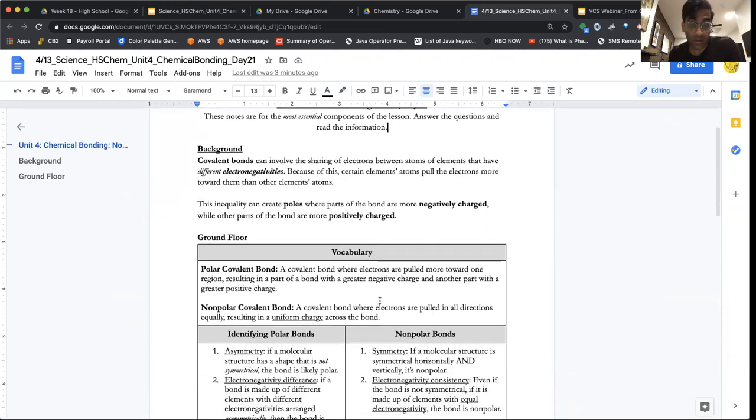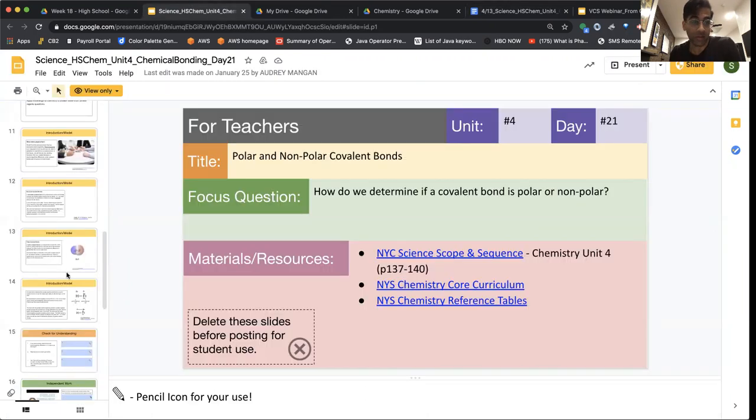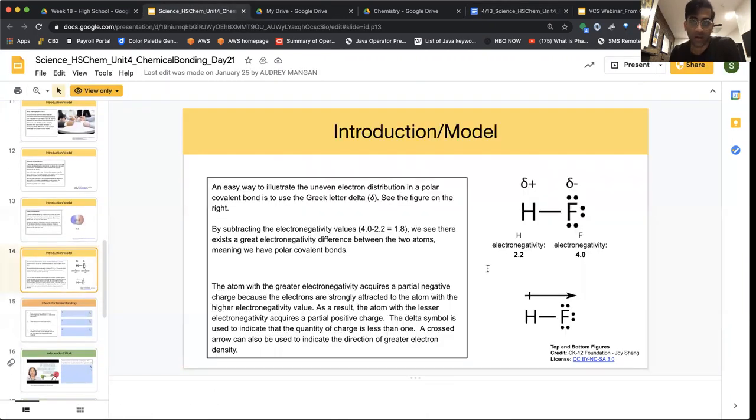The inequalities can create poles where parts of the bonds are more negatively charged and other parts are more positively charged. We have an illustration of that here. We usually use this Greek symbol here to show that in the case of this bond between hydrogen and fluorine, fluorine has a very high electronegativity. Hydrogen has a very low electronegativity.